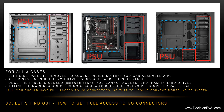In this slide, for all three cases, the left side panel is removed to access the inside so that you can assemble a PC. After the system is built, you have to install the side panel back. Once the panel is closed and screwed down, you cannot access the CPU, RAM, or hard drives. That is the main reason for using a case — to keep all expensive computer parts safe. But you should have full access to IO connectors so that you could connect a mouse and keyboard to the system. So let's find out how to get full access to IO connectors.